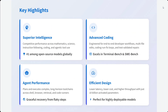Key highlights include superior intelligence — ranked number one among open source models globally for mathematics, science, instruction following, coding, and agentic behavior. Advanced coding is present with excellent Terminal Bench and ACW Bench scores. Agentic performance on Tower Bench is also great. Efficient design offers lower latency, lower cost, and high throughput.